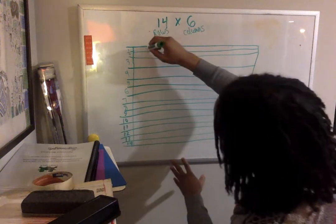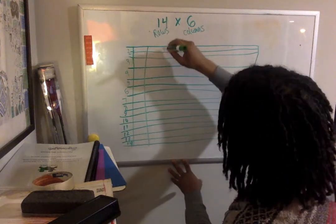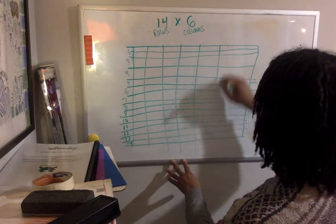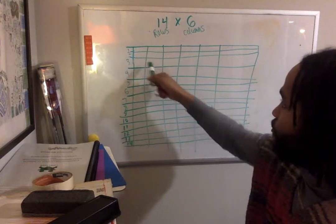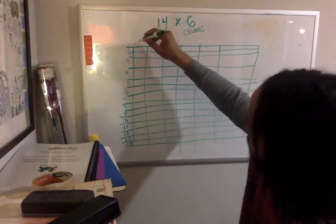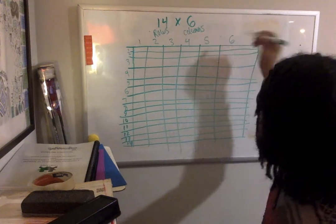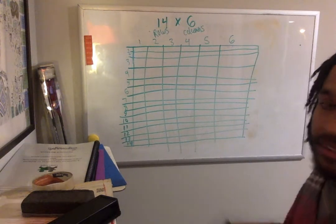Now I'm going to do my six columns. One, two, three, four, five. I don't know if you notice, I put five lines. And now I'm going to label it: one, two, three, four, five, six. All right? So I have my six columns.